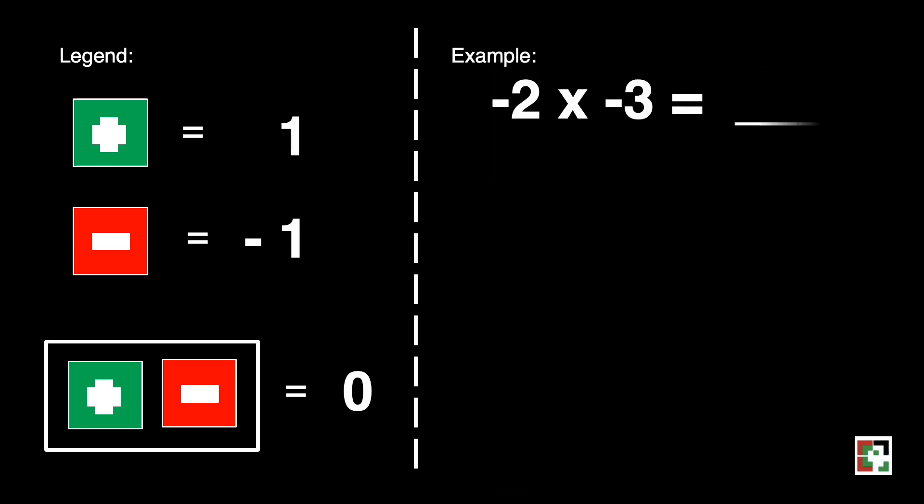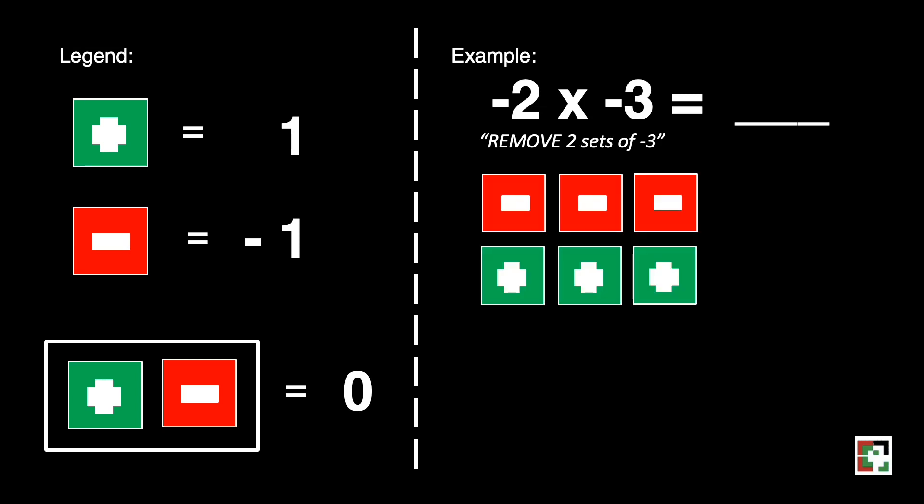Another example, that's negative two times negative three. It means we will remove two sets of negative three. We'll be using the zero pairs. We'll have two sets of three zero pairs. That's one set and another set.